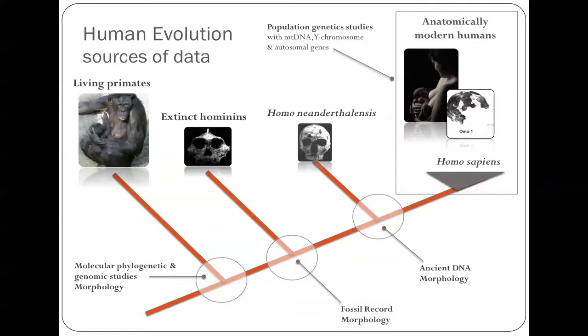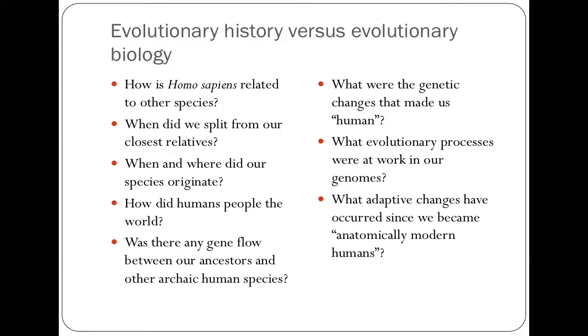There's a period where we can only look at the fossil record and look at the morphology of the fossil record. So when we're looking at things like Homo erectus or Australopithecus and Ardipithecus, we really have to just look at the fossil record. Interestingly, for more recent extinct relatives like Homo neanderthalensis or Neanderthals, we now actually have ancient DNA evidence alongside morphology. And among anatomically modern humans, we can actually do quite sophisticated population genetic studies, population genomic studies now.